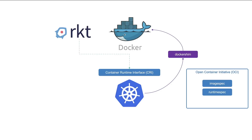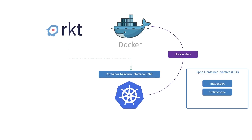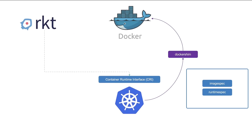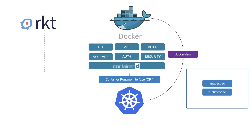Docker isn't just a container runtime alone. Docker consists of multiple tools put together — for example, the Docker CLI, the Docker API, build tools that help in building images, support for volumes, auth, security, and finally the container runtime called runC and the daemon that managed runC, which was called ContainerD. ContainerD is CRI compatible and can work directly with Kubernetes as all other runtimes.